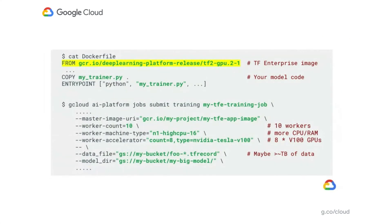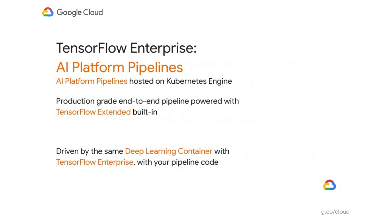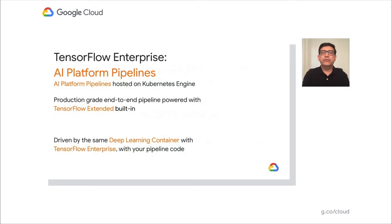Here is an example of how to do this. You create a custom container starting with a TensorFlow Enterprise base image, overlay it with your model training code, then issue one command to start serverless training on GCP. In this example, we are using 10 workers for our distributed training cluster with eight V100 GPUs attached to each. Very soon, Cloud AI Platform Training will use these TFE images as the default runtime, so you will not have to import a TFE container manually. Now that you have trained your model at full enterprise scale, you can make it an end-to-end pipeline using GCP's AI Platform Pipelines, which are built with TensorFlow Extended or TFX.